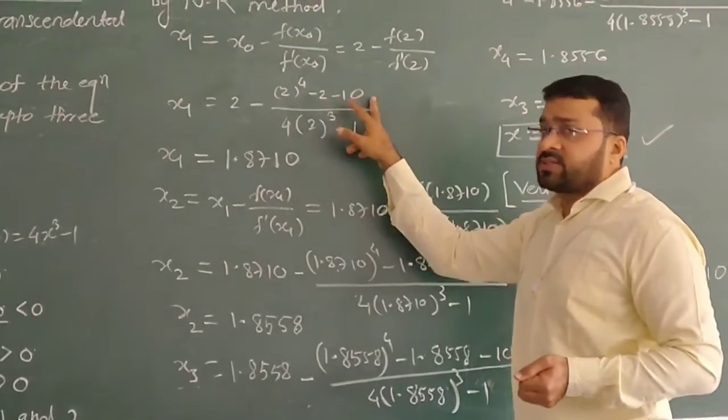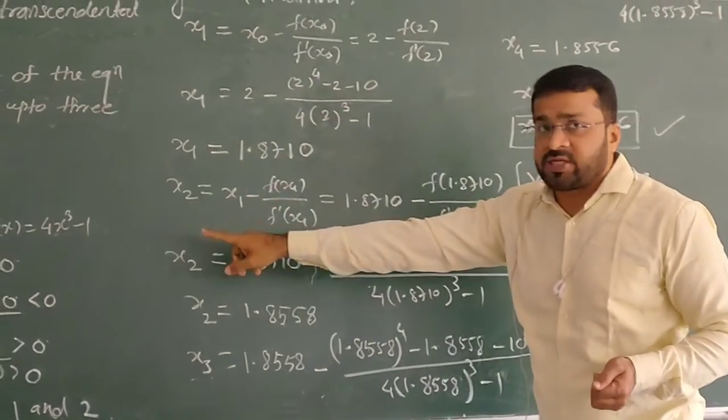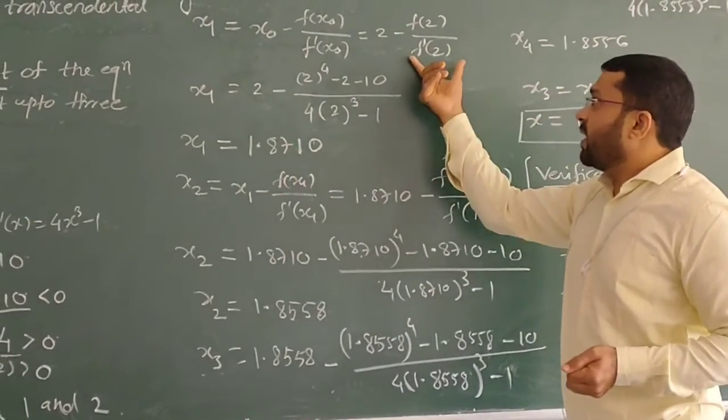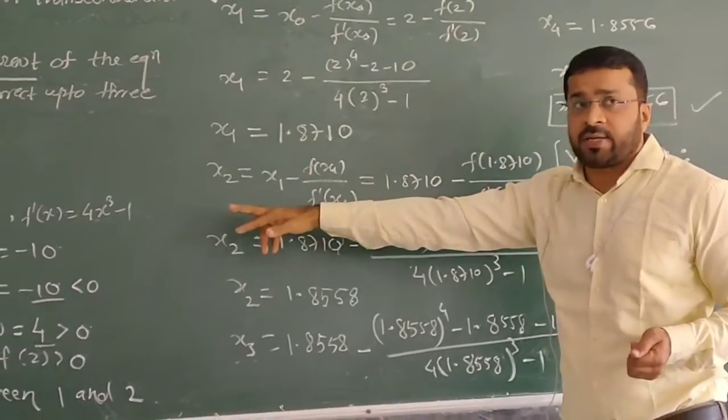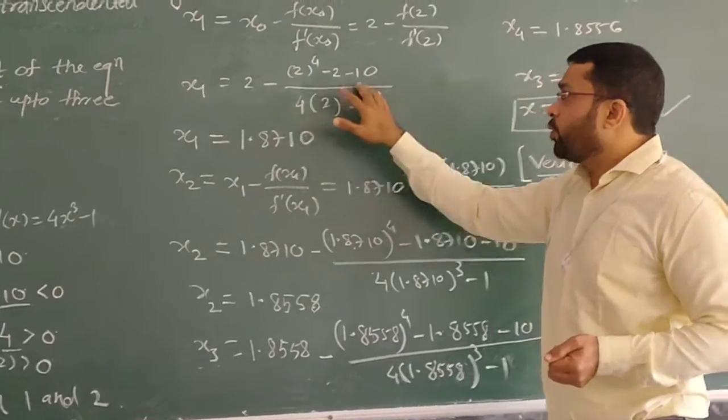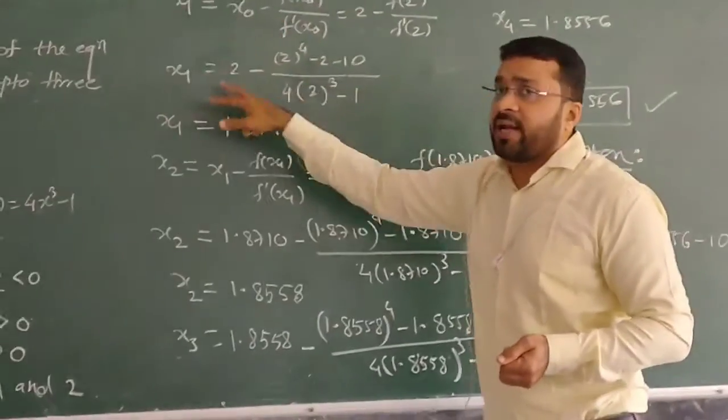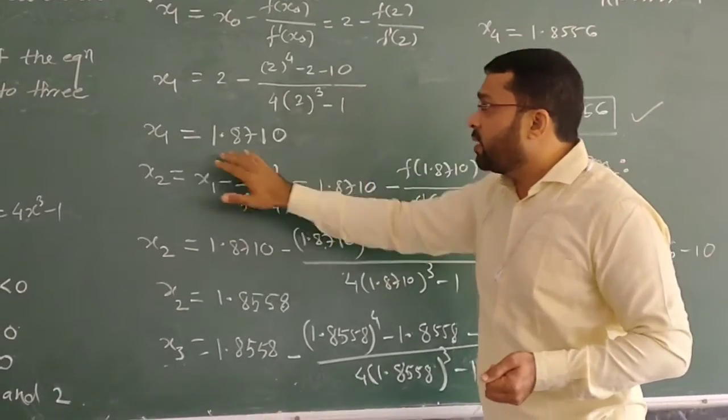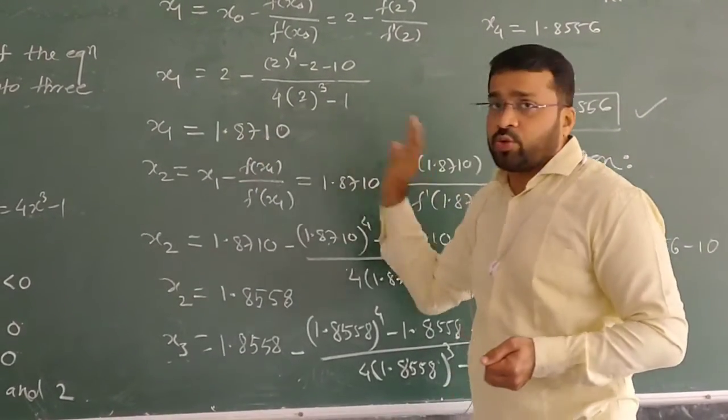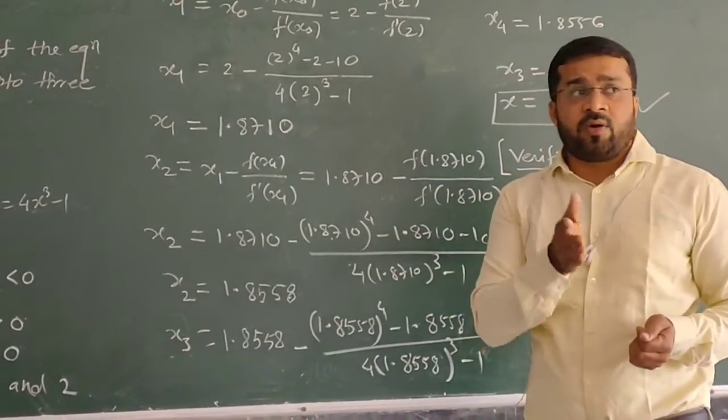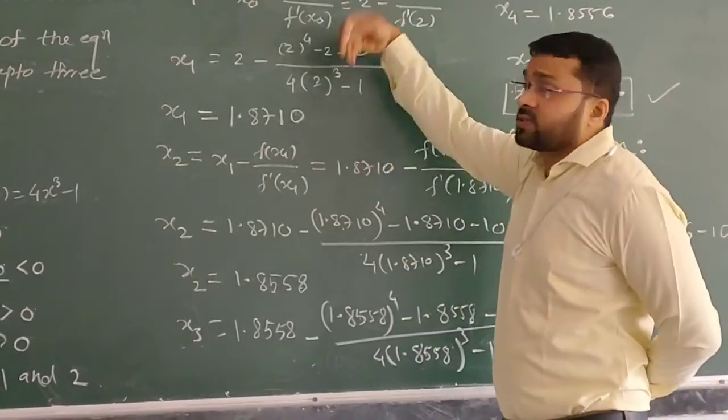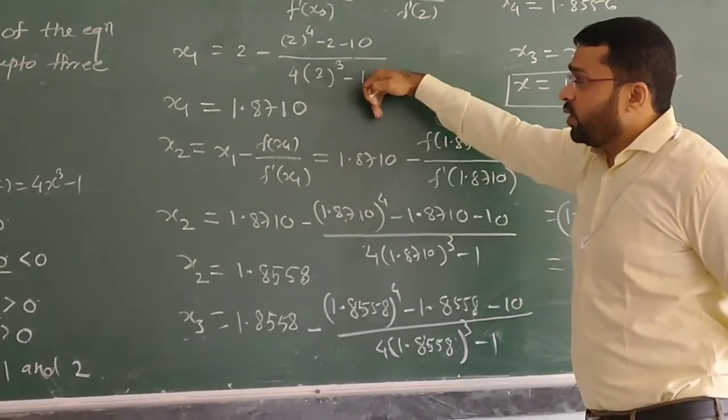That is 2 to the power 4 minus 2 minus 10. Then we have the derivative f'(x). f'(2) equals 4(2)³ - 1. This can be easily calculated using a calculator. This is the first iteration: x₁ = 1.8710.